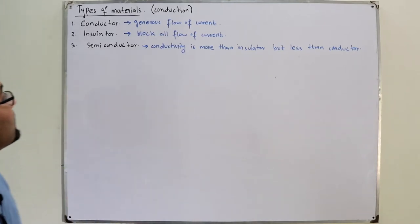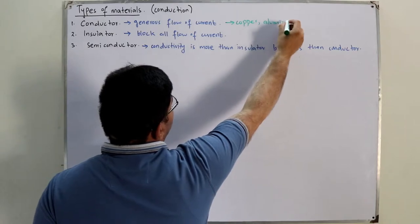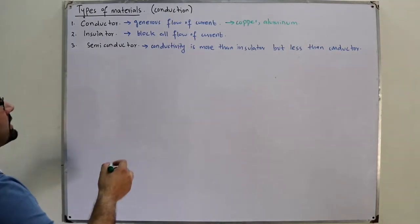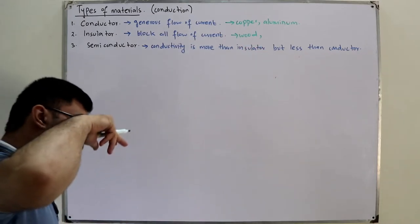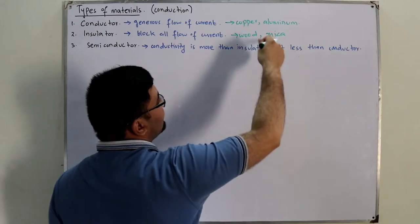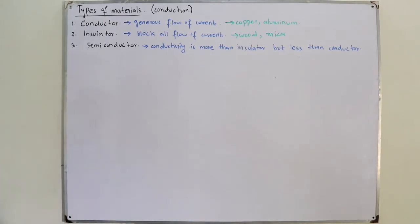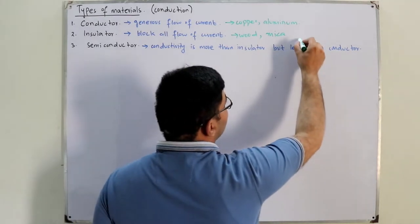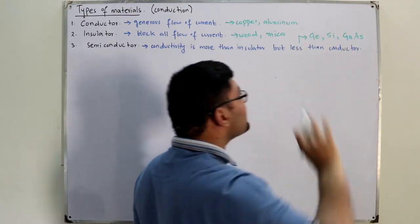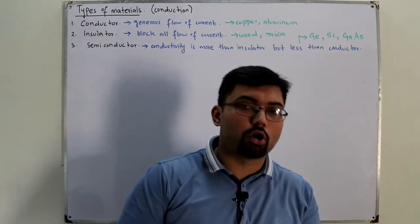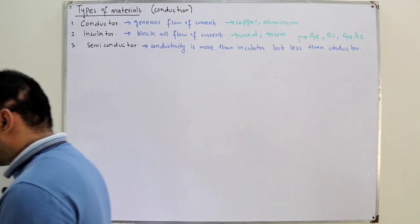Examples of conductors include copper and aluminum, mostly used in transmission line designs. For insulators, wood is a common example, and mica is used for thermal and electrical insulation. For semiconductors, the key elements are germanium, silicon, and gallium arsenide — the three most important we will focus on in this course.